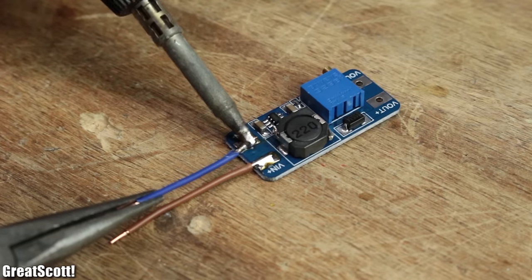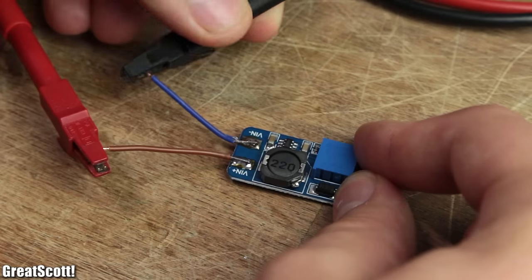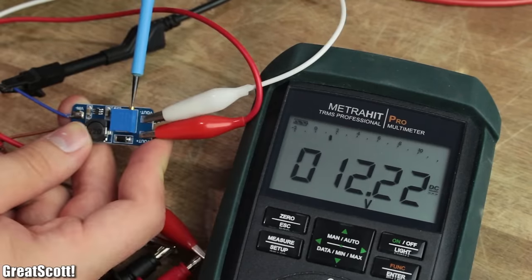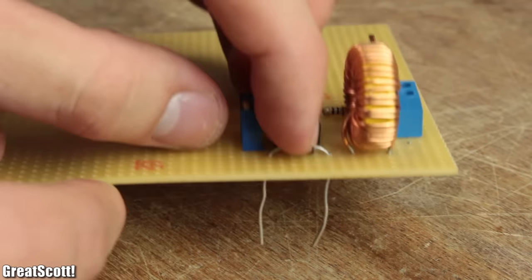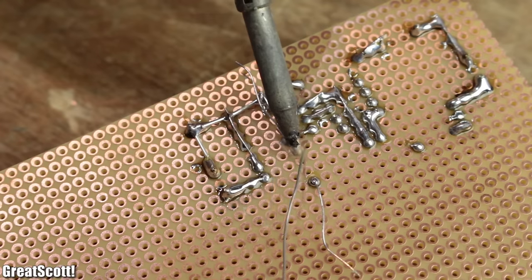a boost converter—basically an electric circuit that can efficiently step up the 5 volts to 12 volts. But the question is: how do those work and can we even build one by ourselves? Let's find out.